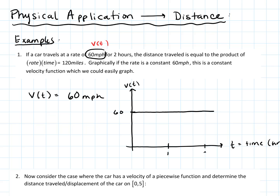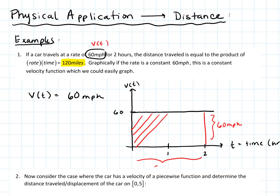Let's mark one hour and two hours on the time axis. We know this car must travel 120 miles, and notice that ends up being the area under the velocity curve. Because if we think about this rectangular area, the height is 60 miles per hour — the constant velocity — and the length is two hours.